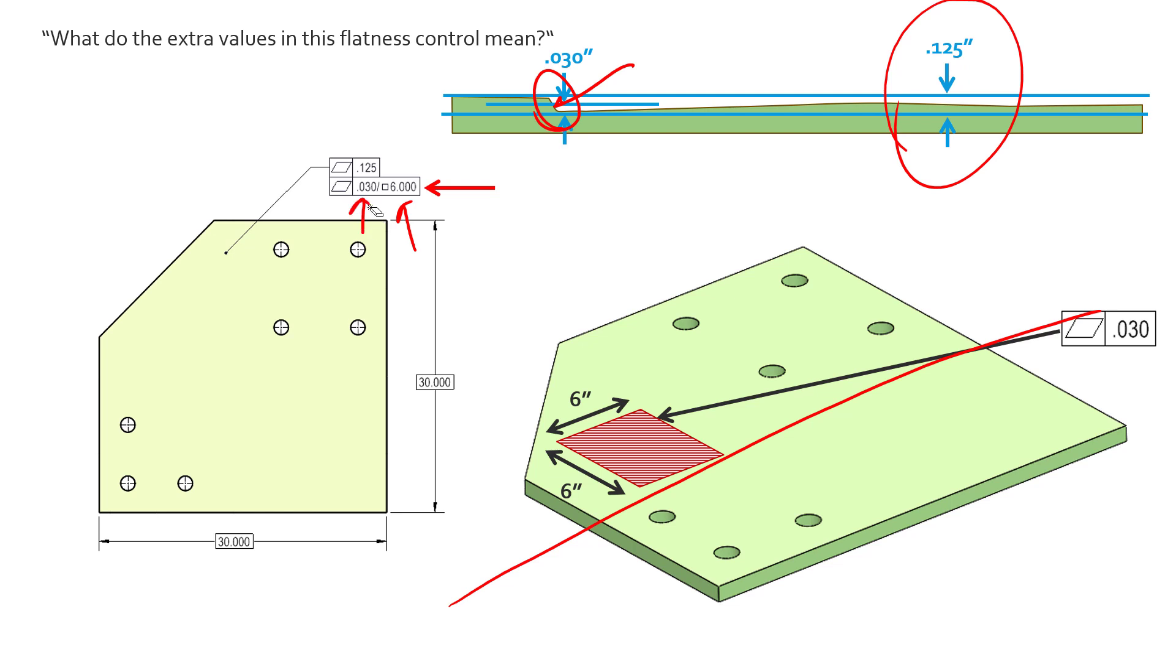So this is kind of refining it further. The first value is still your flatness value telling us how much variation can happen, but the second value can either be square or a diametric area.